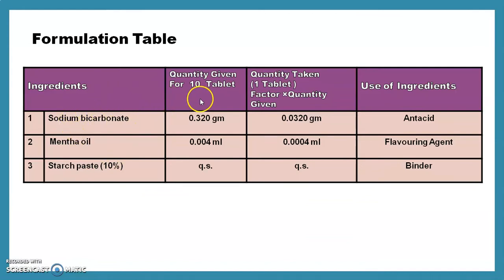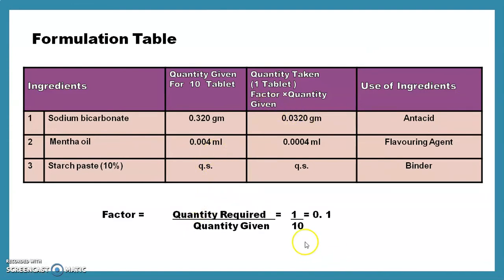The formulation table contains: ingredient name, quantity given, quantity taken, and use of ingredient. Today we prepare granules for one tablet. The formula is given for 10 tablets: sodium bicarbonate 0.320 g, menthol 0.004 mL, starch paste 10% quantity sufficient. We calculate a factor of 0.1 to get the quantity for one tablet. Sodium bicarbonate is used as antacid, menthol as flavoring agent, and starch paste as binder.